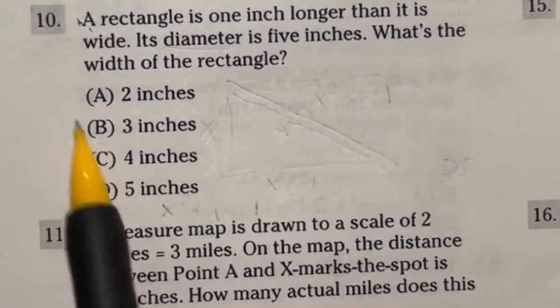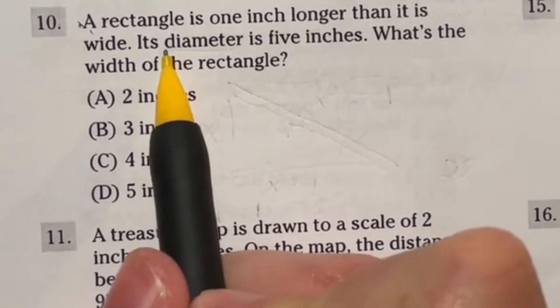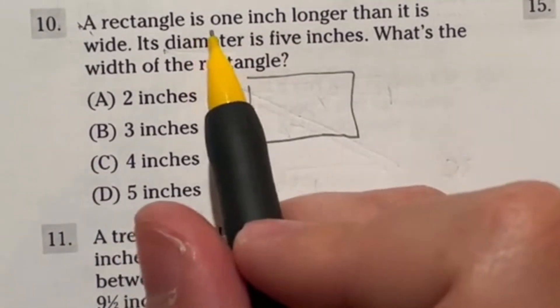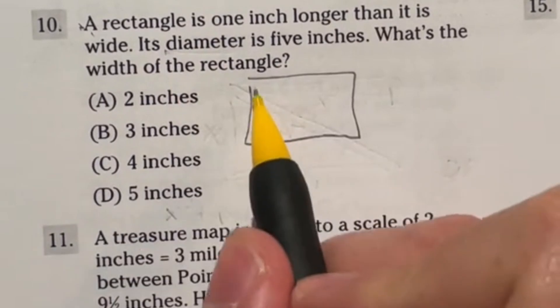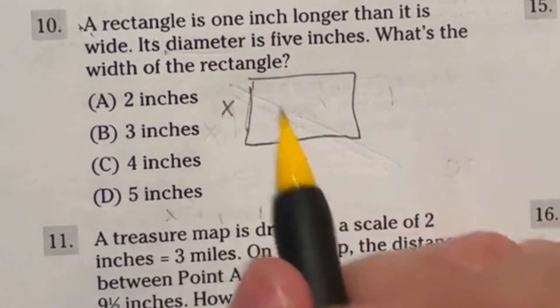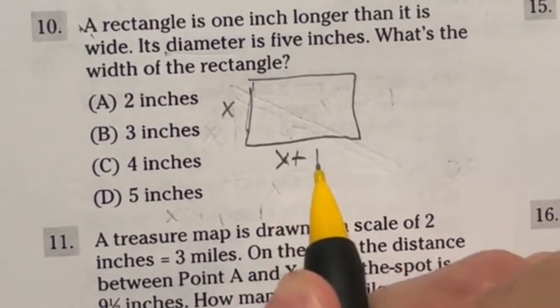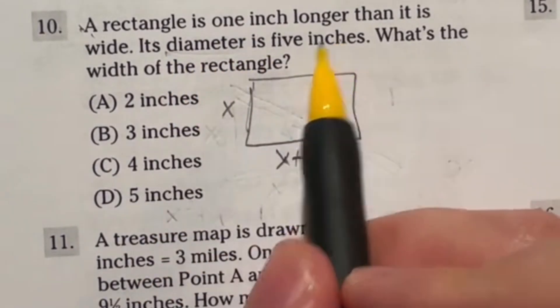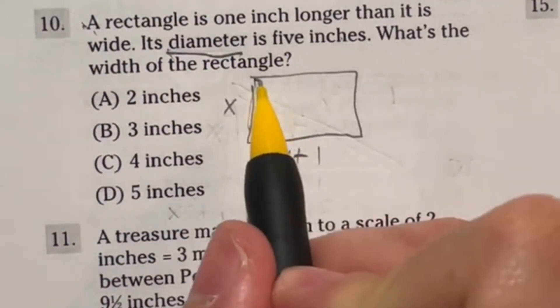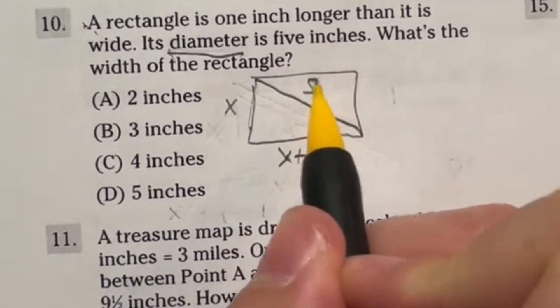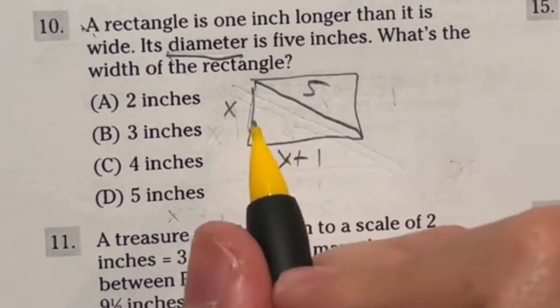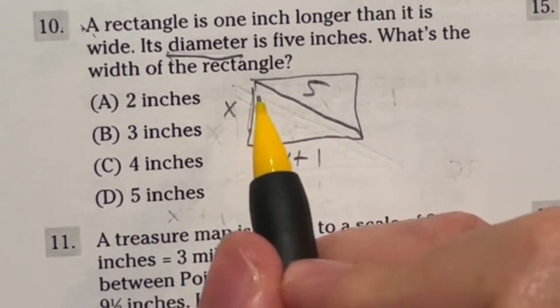Even if there wasn't a typo in question 10, I think you would still get it wrong. Let's talk about it. It says a rectangle is one inch longer than it is wide. So the width, we'll call it X, means that's one inch shorter than the length. So that will be X plus one. Now from here, it says that the diameter is five inches. There's no such thing as a diameter in a rectangle. That's in a circle. That's the typo. It should be a diagonal and that's five.